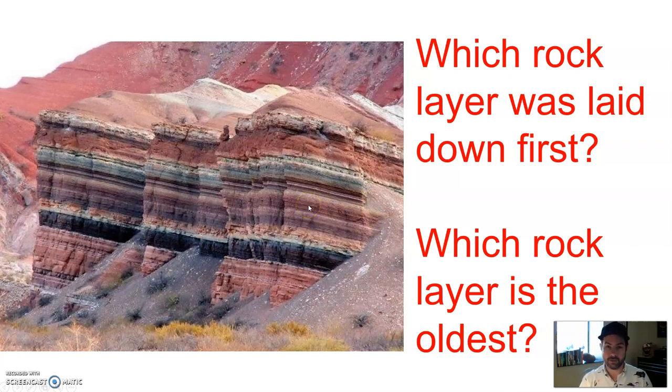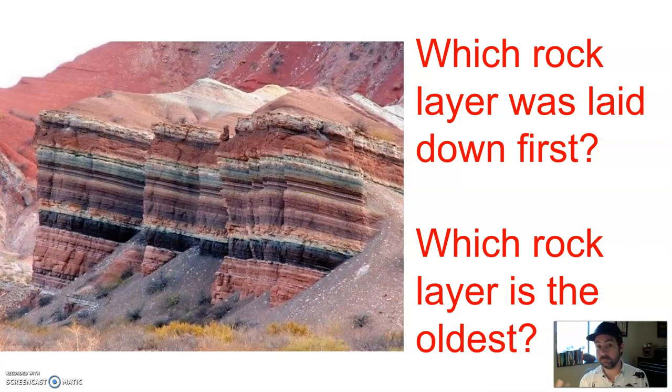That simple principle is the beginning of relative age dating. If we're looking at these layers of rocks and you want to know which one is the oldest, it's the one at the bottom. For instance, at the Grand Canyon, looking at all those layers — where are the oldest rocks? At the bottom.